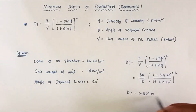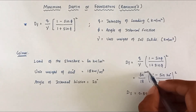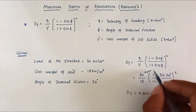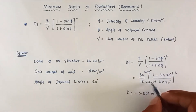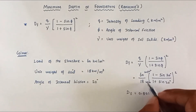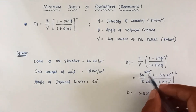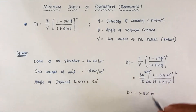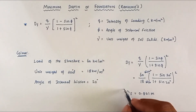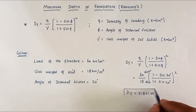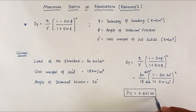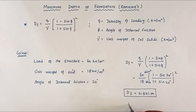The unit works out to meters because kN/m² divided by kN/m³ gives meters, and the squared term is dimensionless, so the result is in meters. Therefore, the minimum depth of foundation is 0.801 meters, which we can take as df = minimum 1 meter.